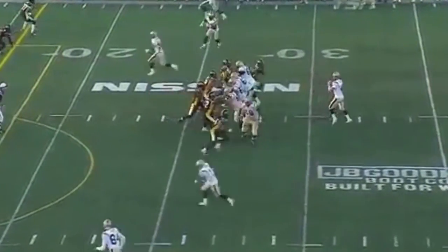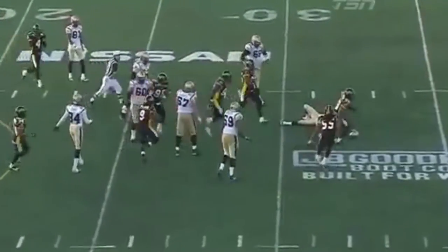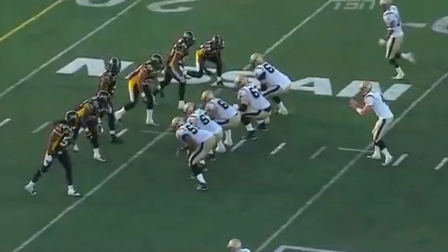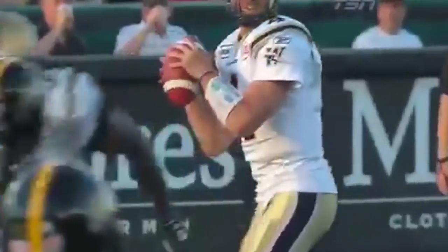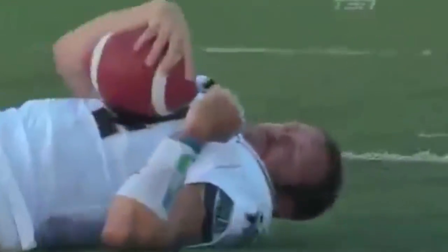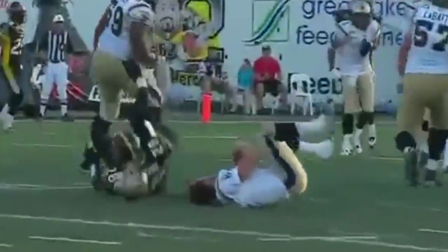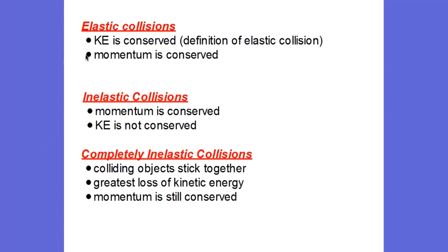The inelastic collision of two bodies always involves a loss in kinetic energy of the system. The greatest loss occurs if the bodies stick together, in which case the collision is called a completely inelastic collision — in this case between a defensive end and a quarterback. The colliding objects stick together and move as one after the collision. Now we have three definitions: the elastic collision, the inelastic collision, and the completely inelastic collision, where colliding objects stick together and the loss of kinetic energy is the greatest.